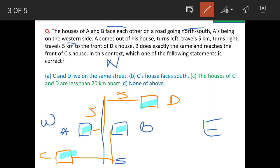The first statement is C and D live on the same street. This is incorrect because C is here and D is here; they are not on the same street.